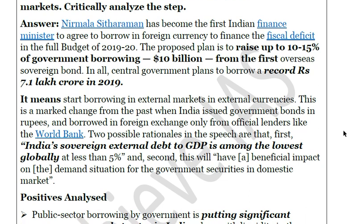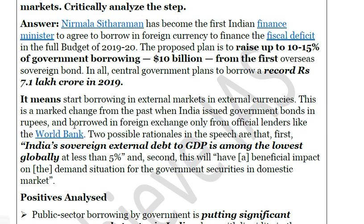We have borrowed only from official lenders like the World Bank and haven't entered private markets. There are two possible rationales the Finance Minister cited in the budget speech. First, India's sovereign external debt is among the lowest globally — at present it is less than 5%, close to 3.8% of GDP. Second, this will have a beneficial impact on the demand for government securities in the domestic market.